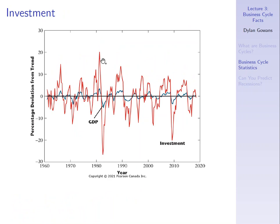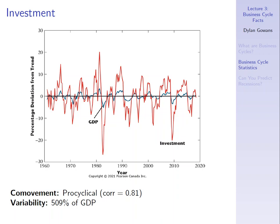For investment: it is pro-cyclical with a correlation coefficient of about 0.81. Its variability is 509% of GDP — the standard deviation of investment is about five times that of GDP. You can see this from the graph: investment has huge swings relative to the much smaller fluctuations of GDP. In terms of lead-lag, the two variables are essentially coincident — turning points of one don't generally anticipate turning points of the other.